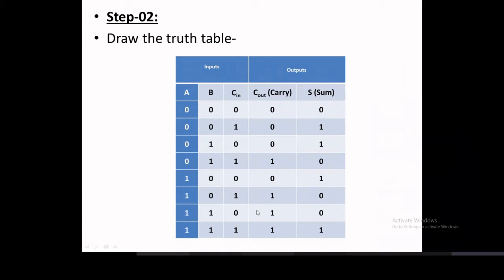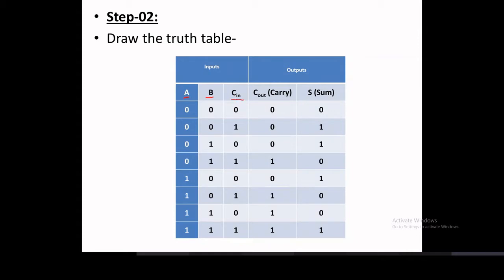Step two: draw the truth table. The truth table has inputs A, B, and C in, and outputs carry out and sum. For zero, zero input, carry can be zero or one, forming two conditions. For A=0, B=0, carry=0: zero plus zero plus zero gives sum=0 and carry=0. For A=0, B=0, carry=1: zero plus zero plus one gives sum=1 and carry=0.